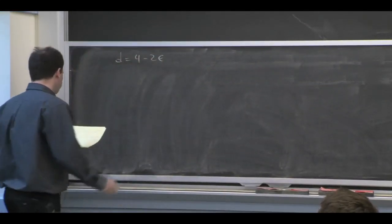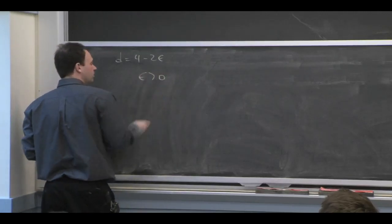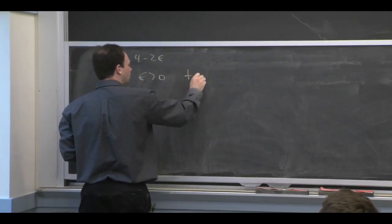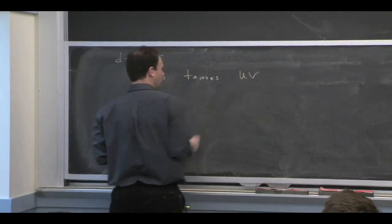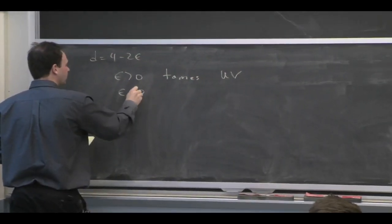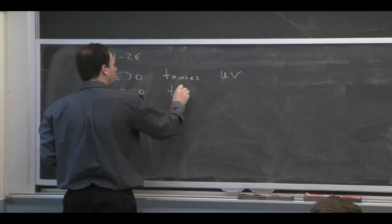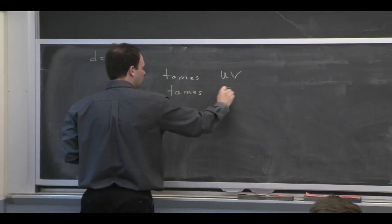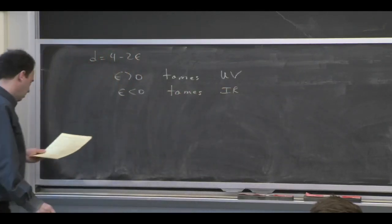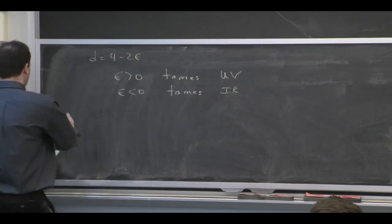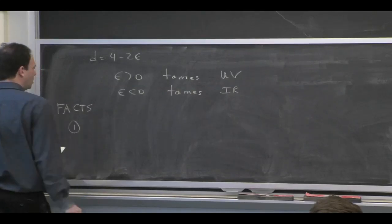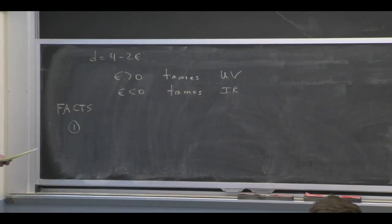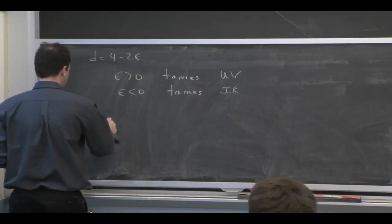So d was equal to 4 minus 2ε. Epsilon greater than 0 is what you need to lower the powers of P, and therefore tame the UV. Epsilon less than 0 can be used to regulate infrared singularities. There's some counterintuitive facts about dimensional regularization, and I want to mention a couple of them to you.